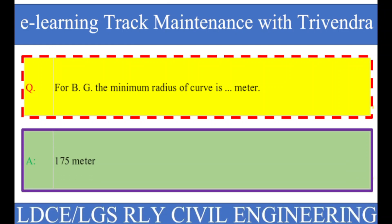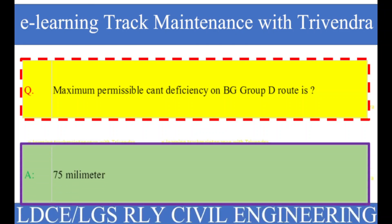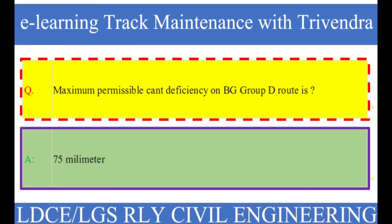Question number 73: Maximum permissible cant deficiency on BG Group D route is? The right answer is 75 millimeters.